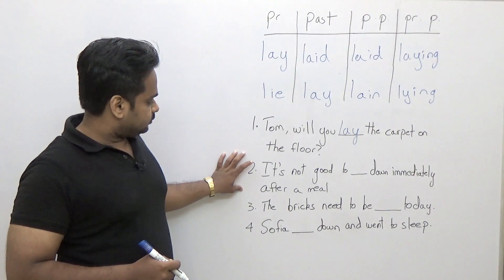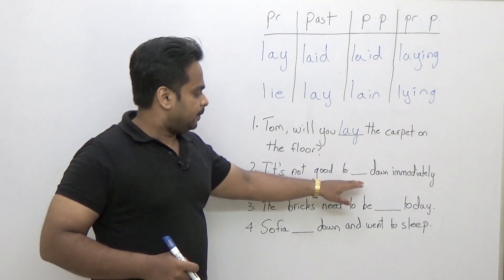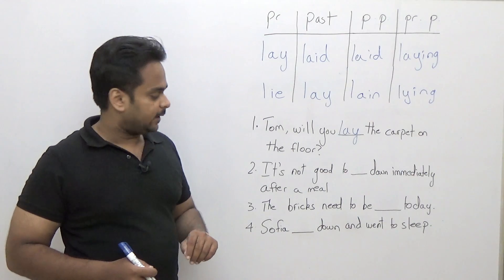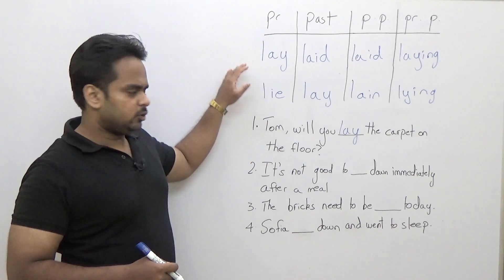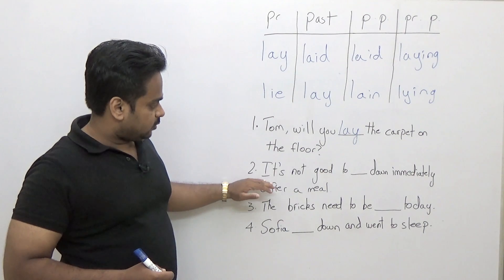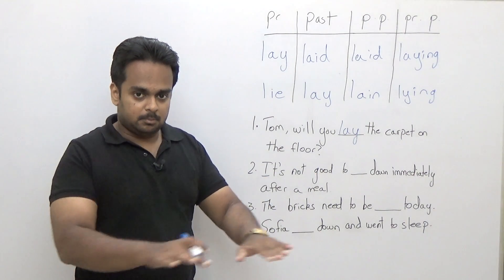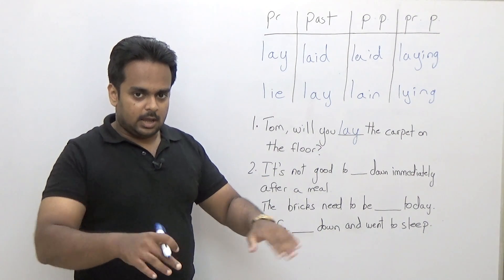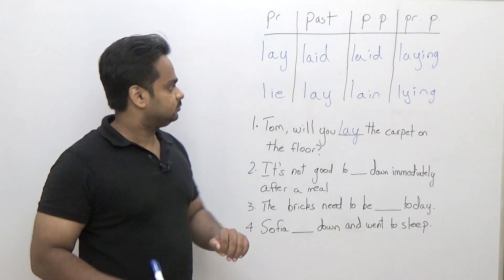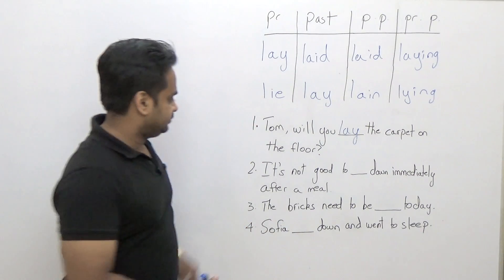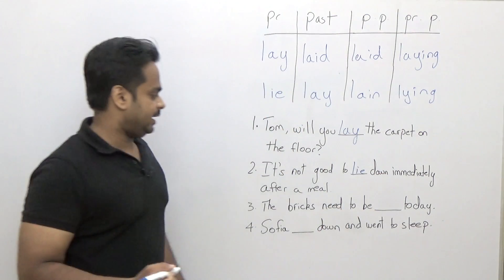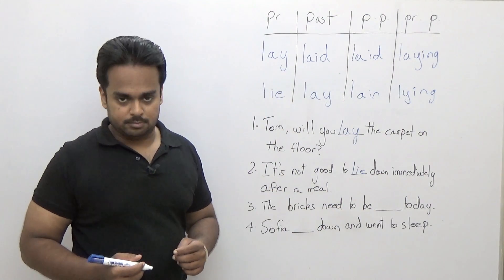Exercise two: 'It's not good to ___ down immediately after a meal.' Here we're talking about reclining after eating, so the answer is 'lie': 'It's not good to lie down immediately after a meal.'